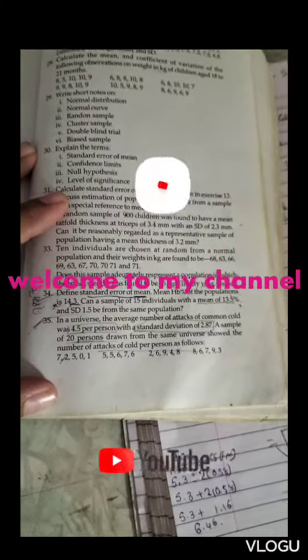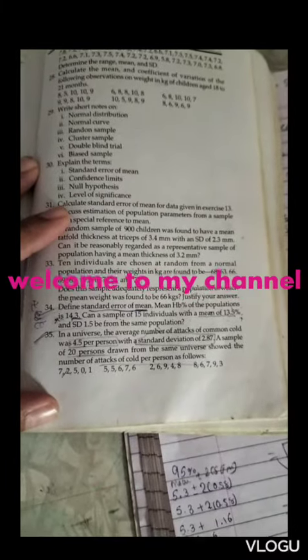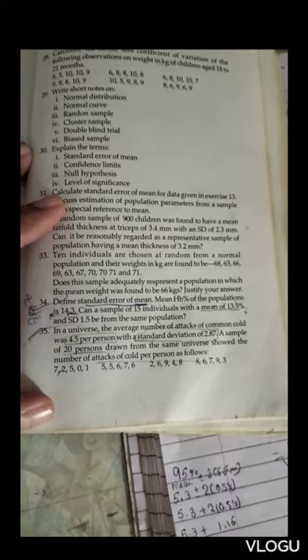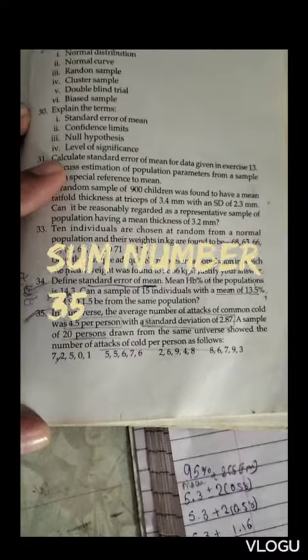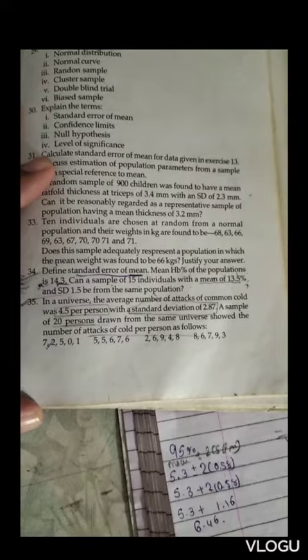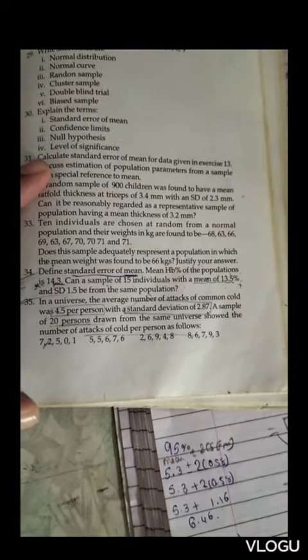Hi everyone, welcome again to my channel for biostatistics. Today we are going to solve problem number 35. Problem 35 is about the universe where the average number of attacks of a common cold was 4.5 per person.